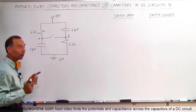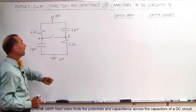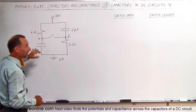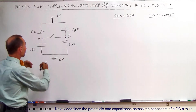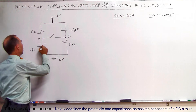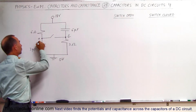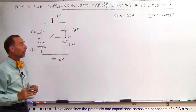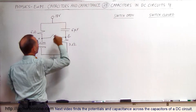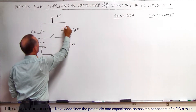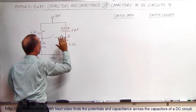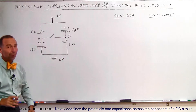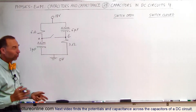No matter what path the current tries to take, every time you try to go anywhere through a resistor you end up at a capacitor. The capacitor only allows current through for a certain amount of time until it fills up with charge — positive charge on one side, negative charge on the other — and current will stop through that branch. Once the capacitor on the right fills up, current stops, and there's no way to get across the switch because it is open.